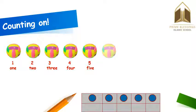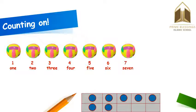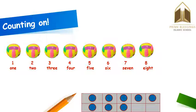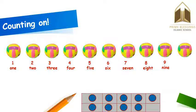Now I am adding one more ball. Then, adding one more ball — number eight. How many balls are there? There are nine balls. And if I add one more to nine balls, now how many balls are there? There are ten balls.